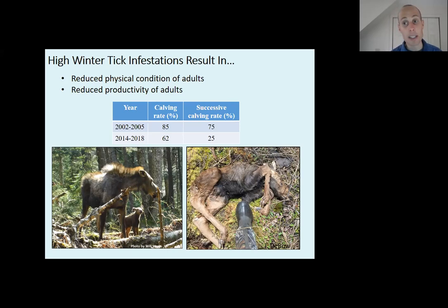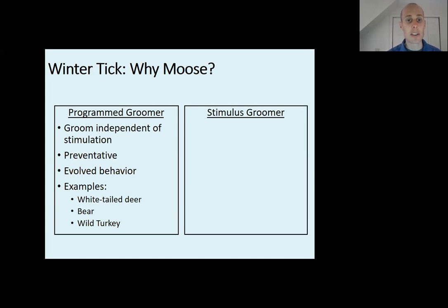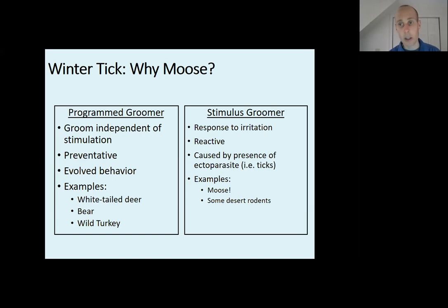The overall message of that research is that winter tick impact had worsened over time, which was concerning. Many folks ask why moose are so impacted by winter ticks and not other species. There are program groomers and stimulus groomers — moose are stimulus groomers. A program groomer like white-tailed deer, bear, or wild turkey is constantly grooming, trying to get ticks off. For moose, they don't try to get that tick off until it itches. By the time it itches, that winter tick is under the coat and that moose is unable to get it off. Deer can groom almost their entire body, constantly licking and getting ticks off.